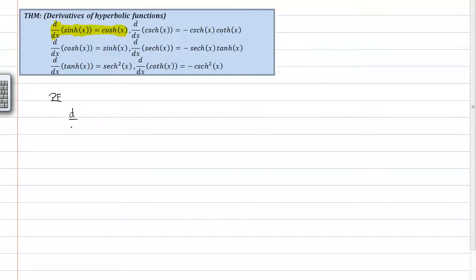So I'll start with the derivative with respect to x of the hyperbolic sine of x. It's the same thing as the derivative with respect to x of the exponential form of the hyperbolic sine, which is e to the x minus e to the negative x over 2.